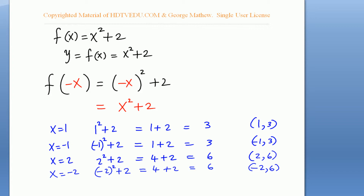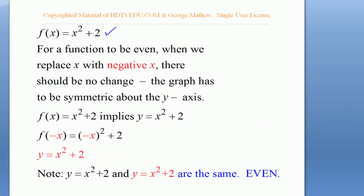This function is going to be symmetric about the y-axis. We are given f(x) = x squared plus 2. For a function to be even, when we replace x with negative x there should be no change. The graph has to be symmetric about the y-axis, and that is what we see. So the function is even.